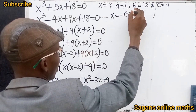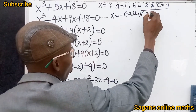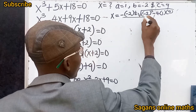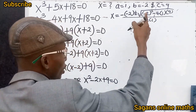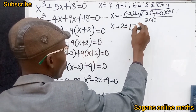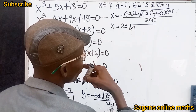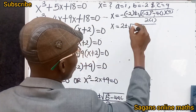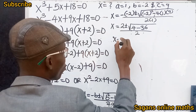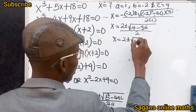Substituting into the formula: x equals minus (minus 2) plus or minus the square root of (minus 2)² minus 4 times 1 times 9, all divided by 2 times 1. This gives x equals 2 plus or minus the square root of 4 minus 36, divided by 2. So we get x equals 2 plus or minus the square root of minus 32, all divided by 2.